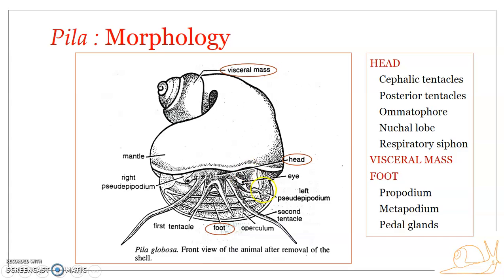Lateral to each omatophore is a structure referred to as the nuchal lobe or pseudepipodium — fleshy lobes found lateral to the tentacles and omatophore. The left and right pseudepipodia connect the head with the mantle. The left nuchal lobe modifies itself into a respiratory siphon when Pila is on land: it extends and rolls to form a tube-like structure, and through this respiratory siphon atmospheric air is drawn into the mantle cavity where respiration takes place.